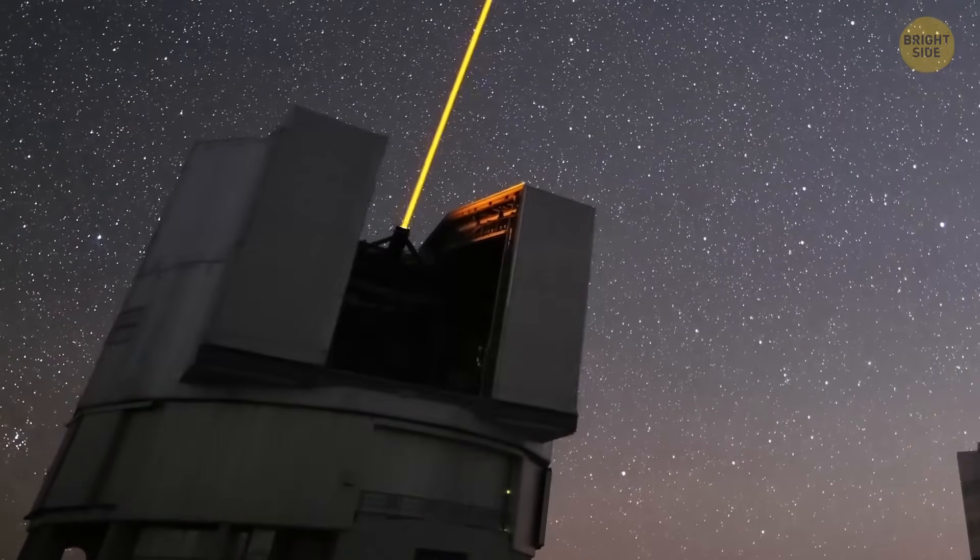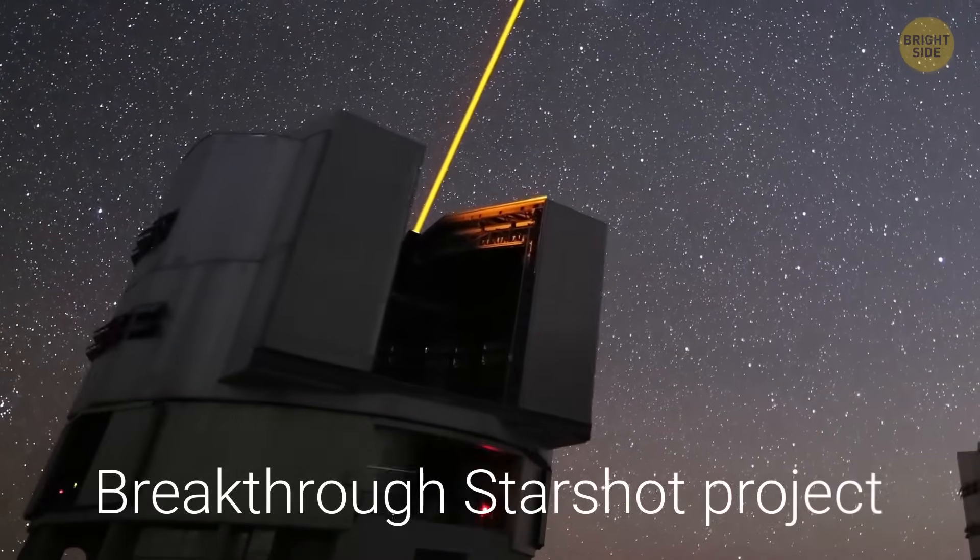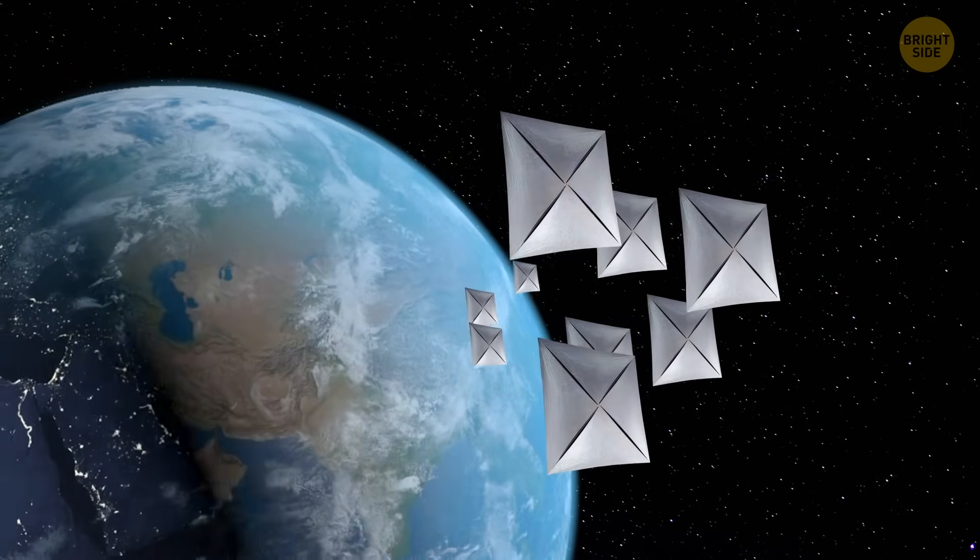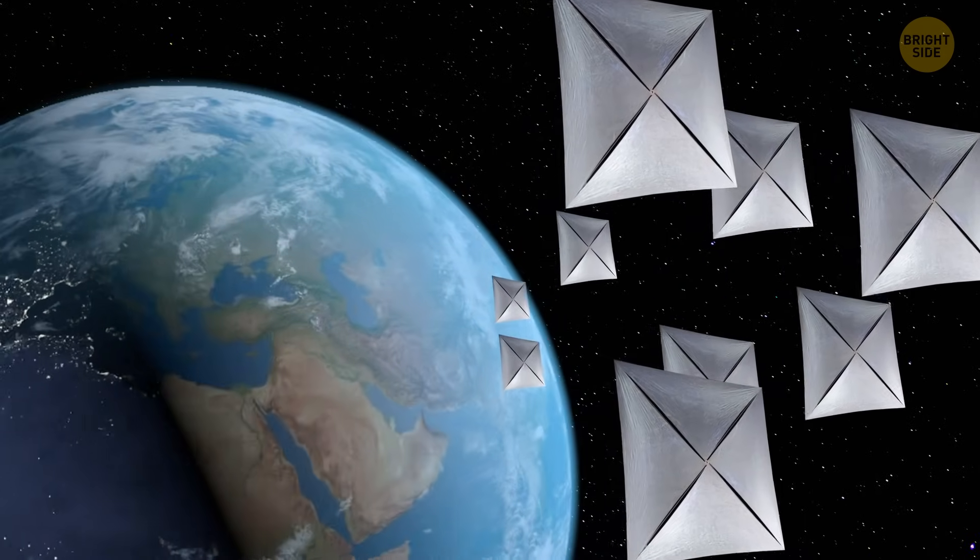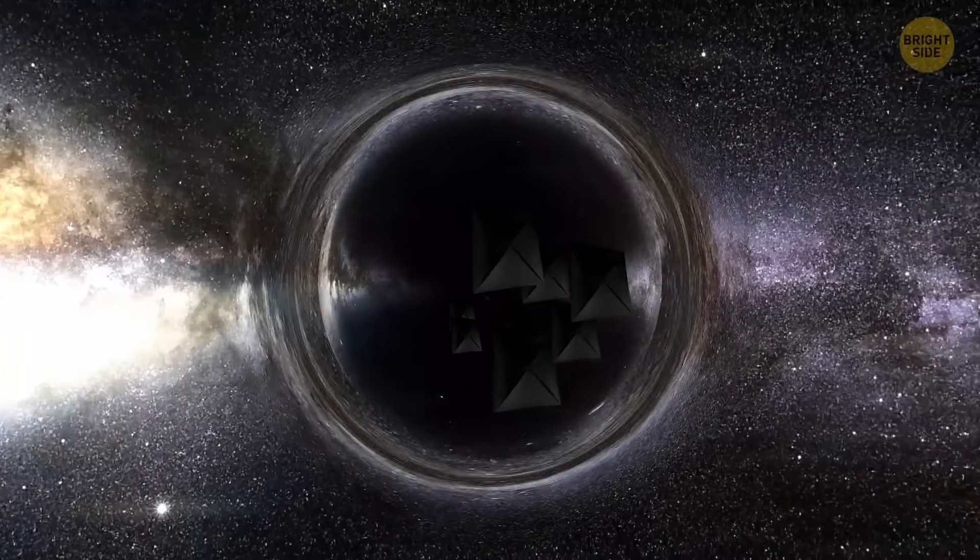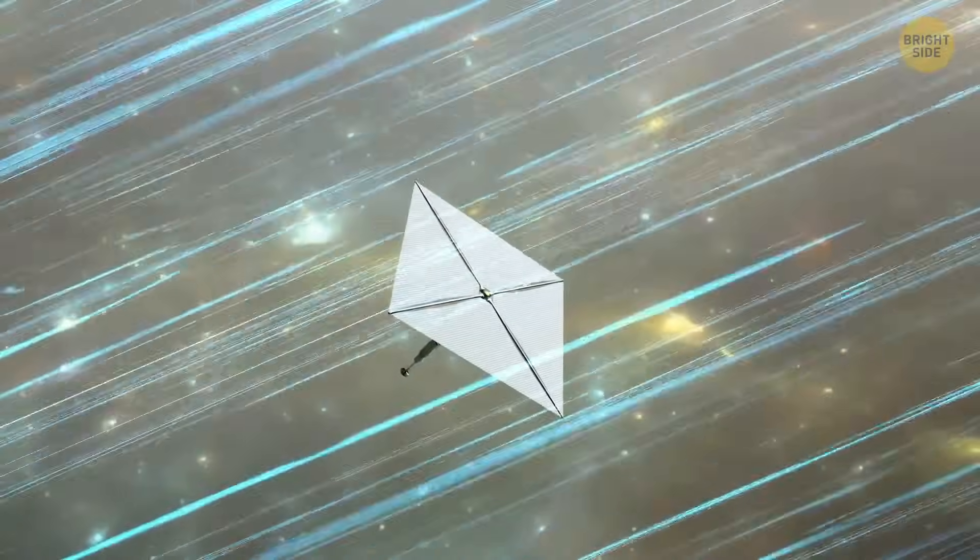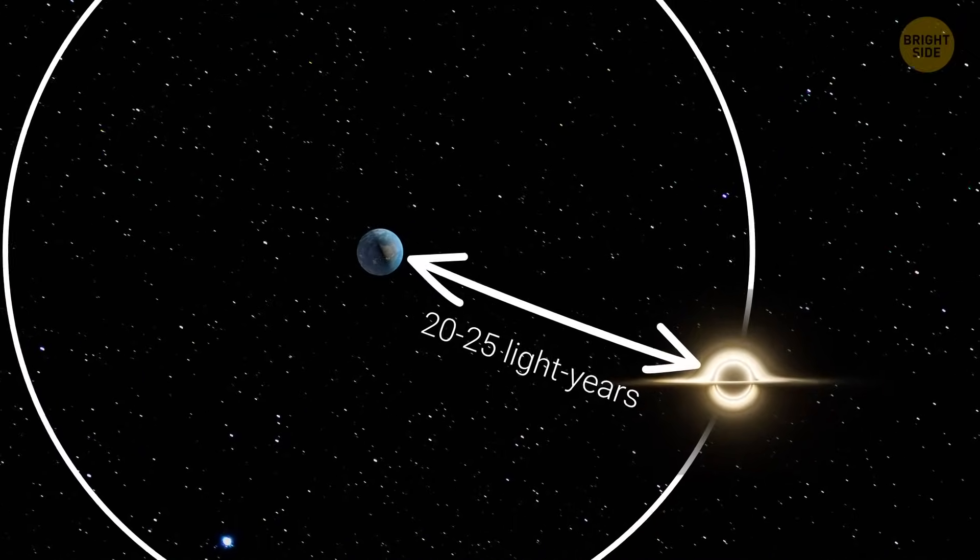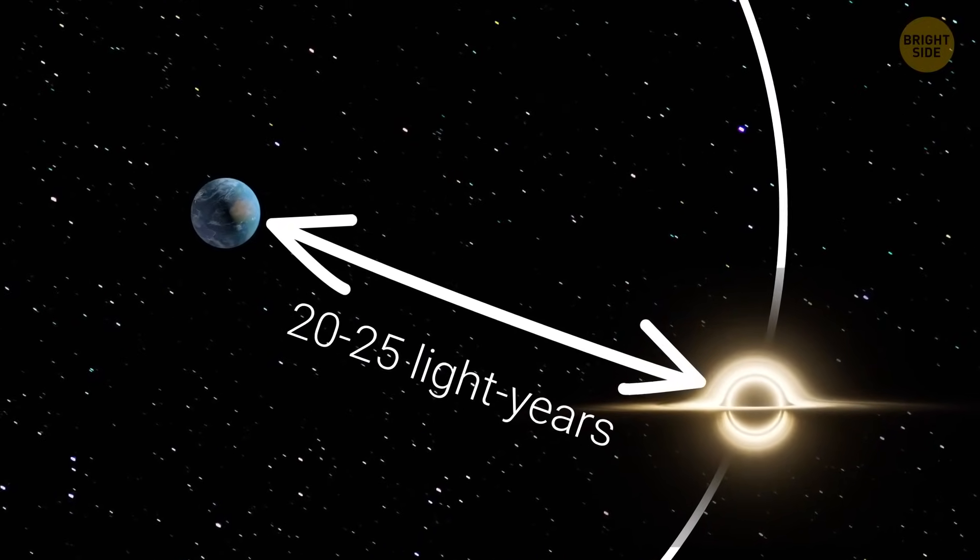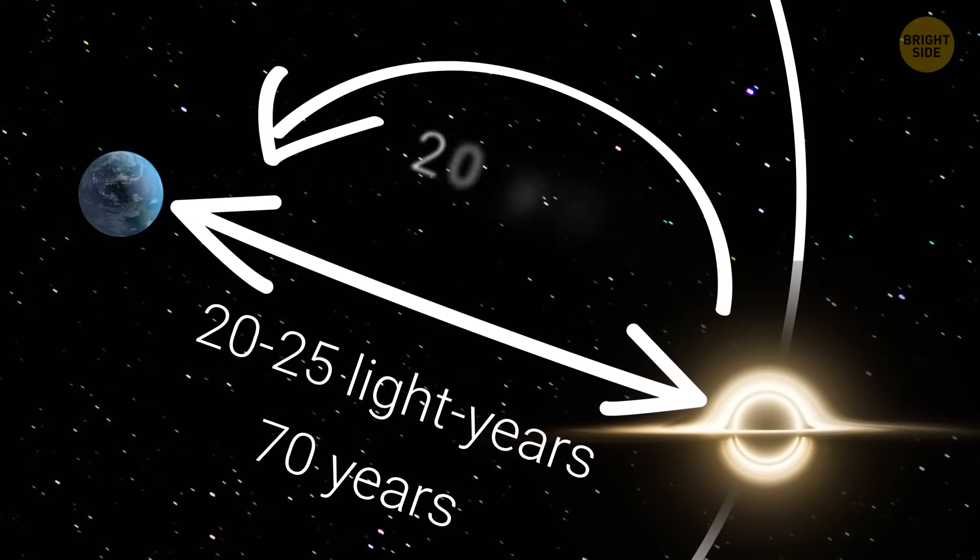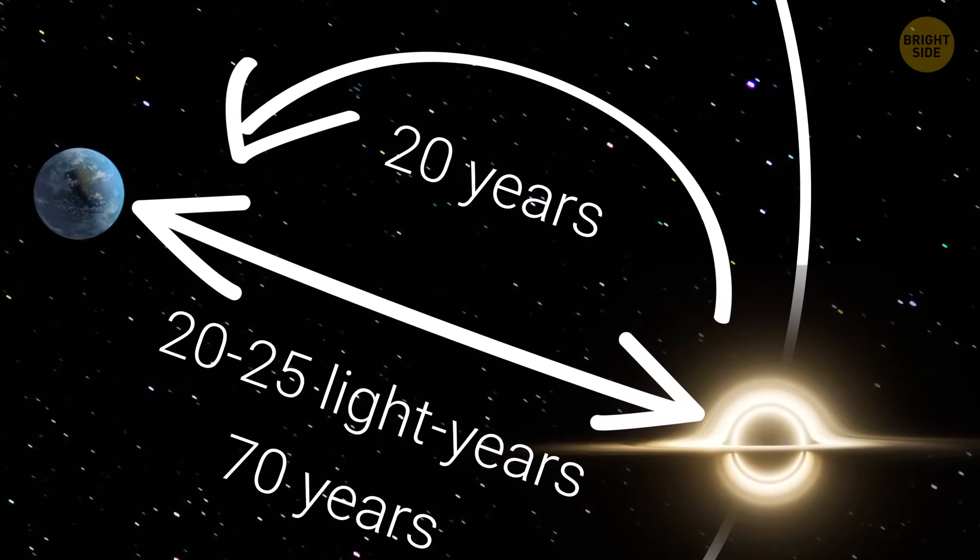This idea is similar to the Breakthrough Starshot Project. This project aims to send a swarm of nanocrafts to Alpha Centauri. We could probably apply the same concept, but target black holes. Traveling at roughly a third of the speed of light, these probes could reach a black hole 20 to 25 light-years away in about 70 years. And then, the data would take another 20 years to get back to Earth.